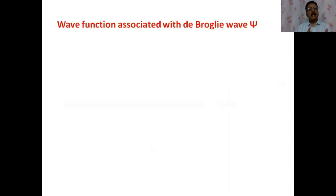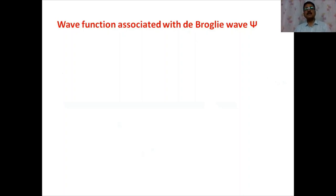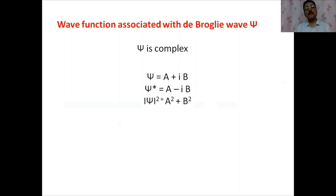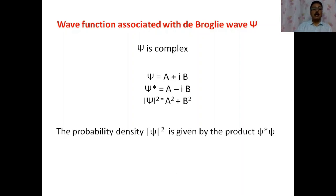If there is a wave associated with a moving body, what kind is the wave function ψ? This wave function associated with a moving particle is a complex function: it can be written as ψ = a + ib, where ψ* = a − ib. The modulus squared, |ψ|², is a real quantity. We will see later that |ψ|² is defined as the probability density, given by the product ψ*ψ.